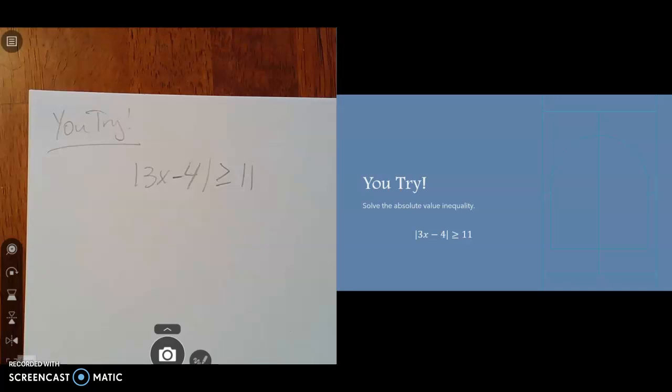Hi, you all just finished a You-Try where you get to solve an absolute value inequality. Let's see how it went. The inequality I gave you was the absolute value of 3x minus 4 is greater than or equal to 11.